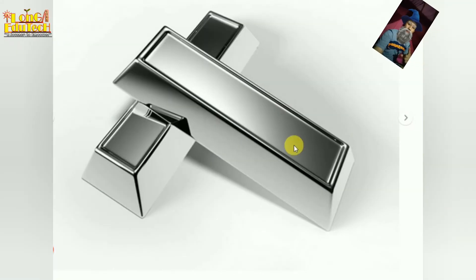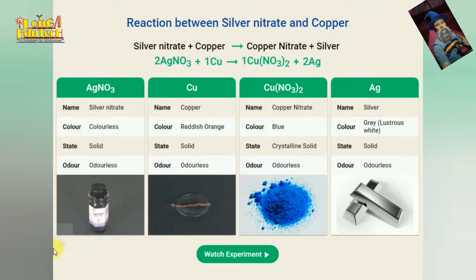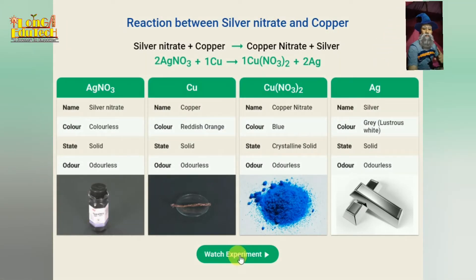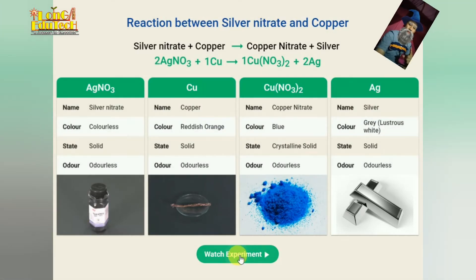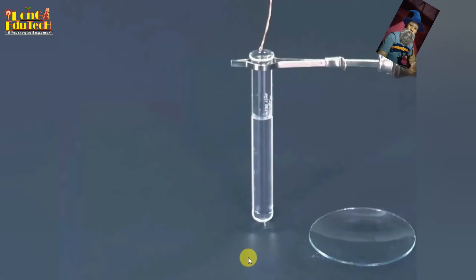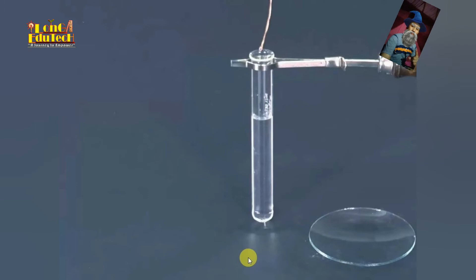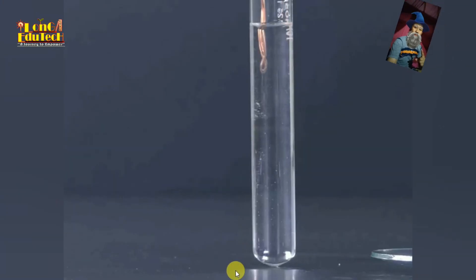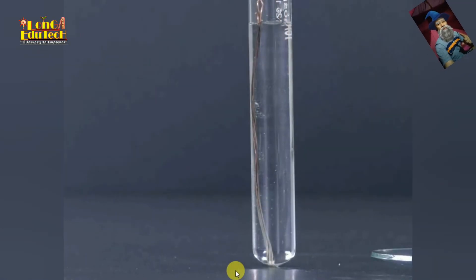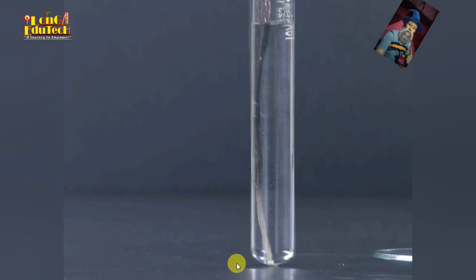Let us see the experiment now. So here we take this is the silver nitrate, this is the silver nitrate colorless, and here we put a strip of the copper.